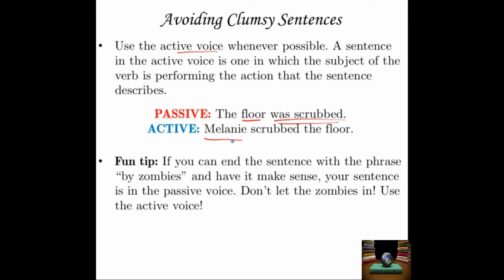To write it in the active voice, you need something more like: 'Melanie' (subject) 'scrubbed' (verb) 'the floor.' Now we know who's doing the scrubbing — it's in the active voice, and it's much clearer and more interesting. Fun tip: if you can add the phrase 'by zombies' to the end of the sentence and have it make sense, your sentence is in the passive voice. 'The floor was scrubbed by zombies' — that works. Whereas 'Melanie scrubbed the floor by zombies' doesn't make sense. So you know the second sentence is in the active voice. Don't let the zombies in — use the active voice.